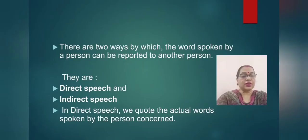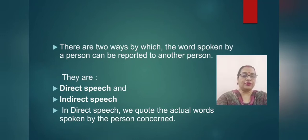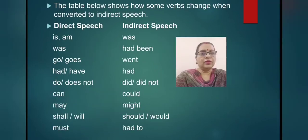As we have discussed earlier, there are two ways by which the words spoken by a person can be reported to another person. They are direct speech and indirect speech. In direct speech, we quote the actual words spoken by the person concerned. When you convert direct to indirect speech, there are some important points you have to remember.